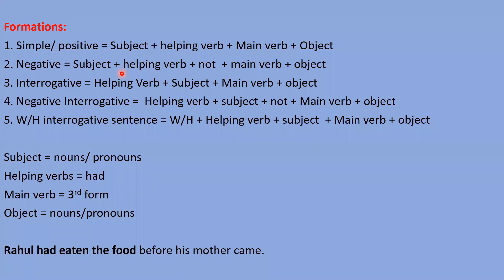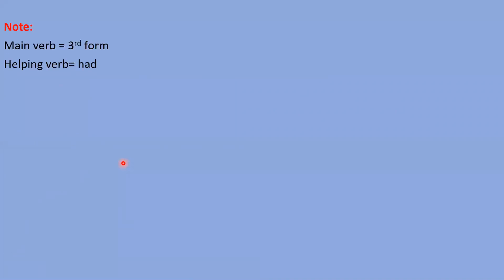For example: 'Rahul has eaten the food before his mother came.' The part in bold letters is in past perfect tense — subject, 'had' as helping verb, 'eaten' as the third form main verb, and 'the food' as the object. Note: main verb is in third form, and helping verb is 'had.' There is no other option.